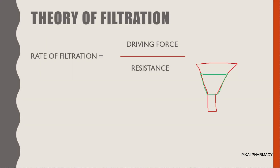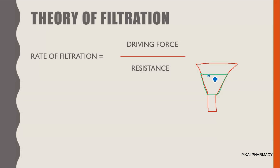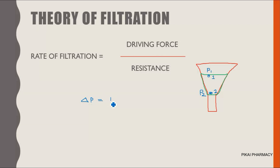Let me explain the pressure drop. In this diagram, the red color indicates our funnel and the green color indicates the filter media. Taking two points on the filter media: point one at the top and point two at the bottom. The pressure at point one is P1 and at point two is P2. The main driving force is the pressure drop, ΔP, which equals P1 minus P2.